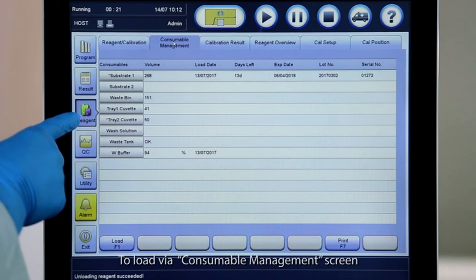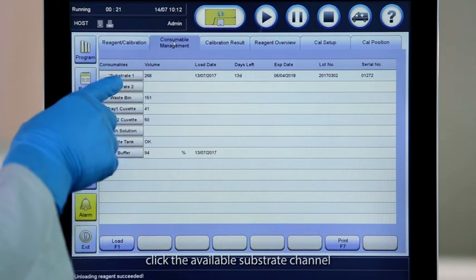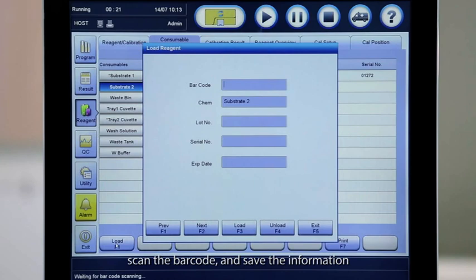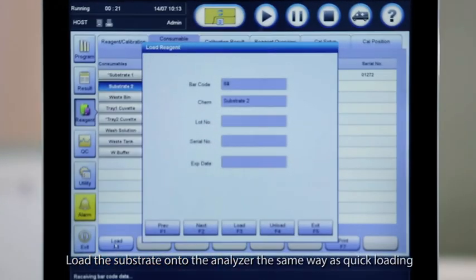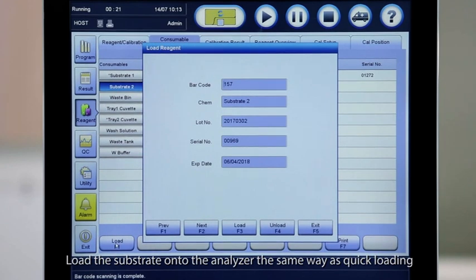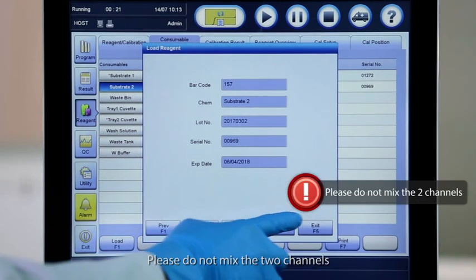To load via consumable management screen, click the available substrate channel. Scan the barcode and save the information. Load the substrate onto the analyzer the same way as quick loading. Please do not mix the two channels.